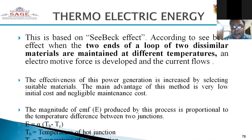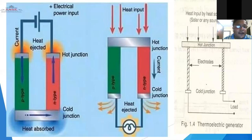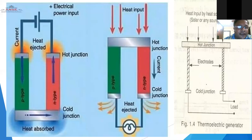This diagram shows how current is passing and how heat is either absorbed or input. Depending on the conditions and the arrangement, heat will be absorbed in one configuration, and in another arrangement, the heat input will occur from a specific side.